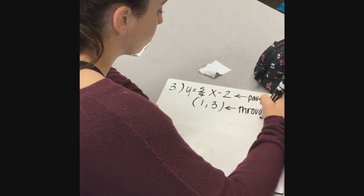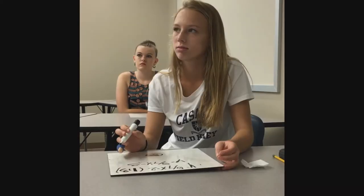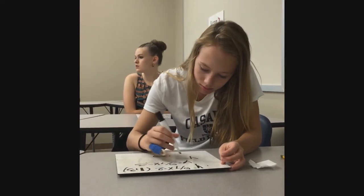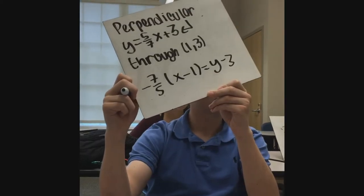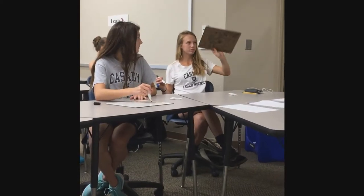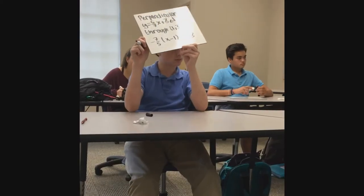We talked about active learning and student movement being important. So I thought one good way to get them involved is using the whiteboards. I have small whiteboards that I pass out to each student, and they can move around a little to help pass them out, and also move around when they raise them up to show me their answers. And it gives me an opportunity to give them instant feedback.